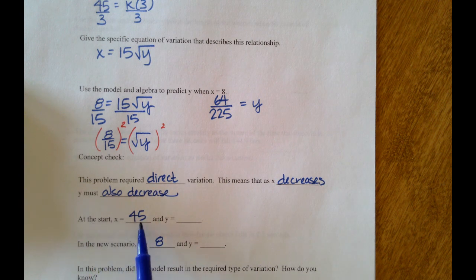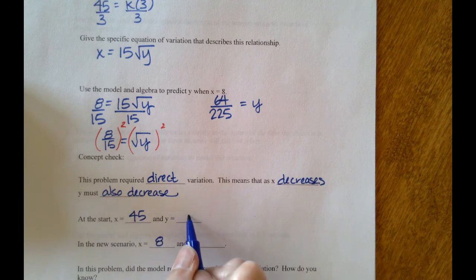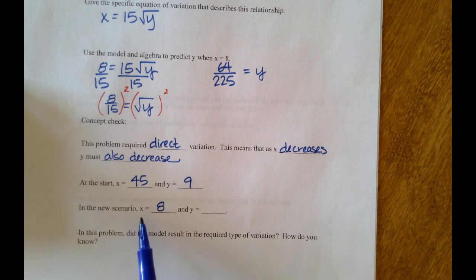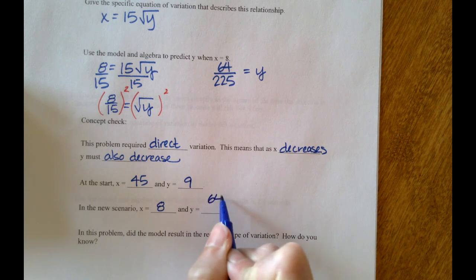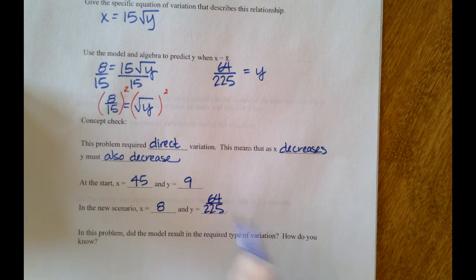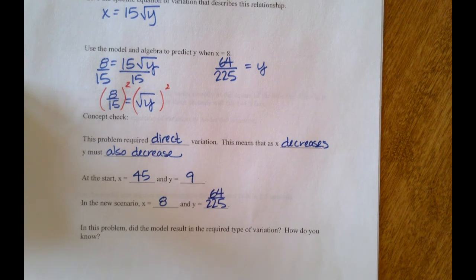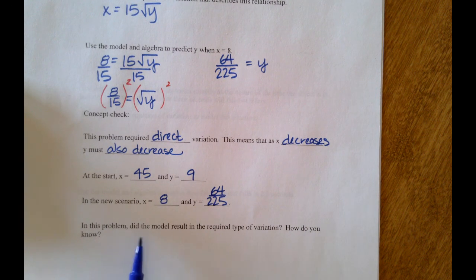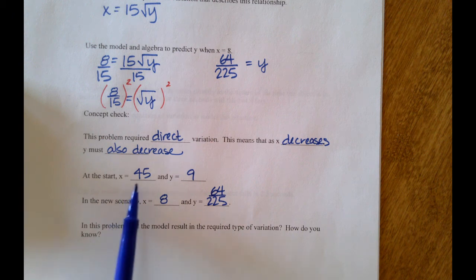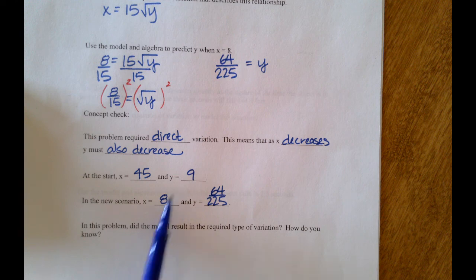At the start of the problem, x was 45 and the partner y was 9. In the new scenario, x was 8 and you found out that y was 64/225. In this problem, did the model result in the required type of variation? Well, the x decreased and so did the y, so yes.